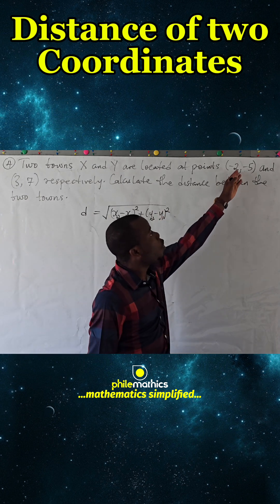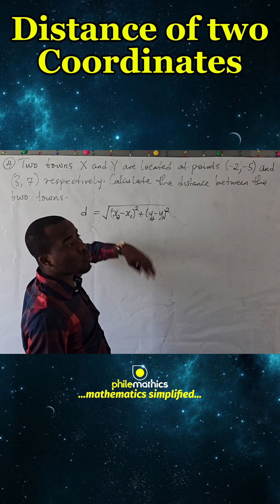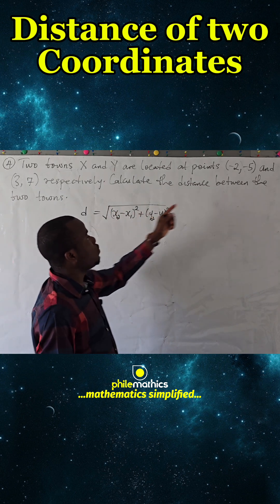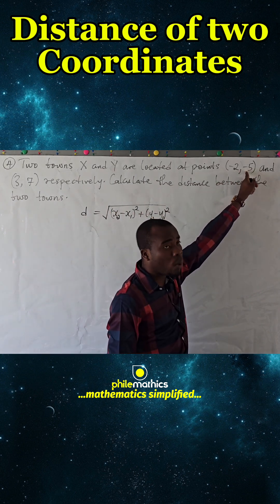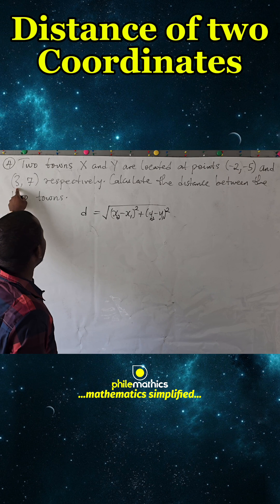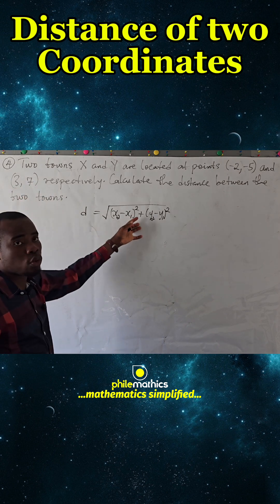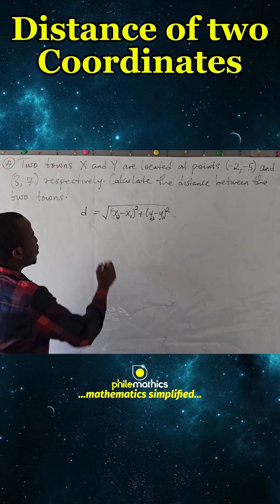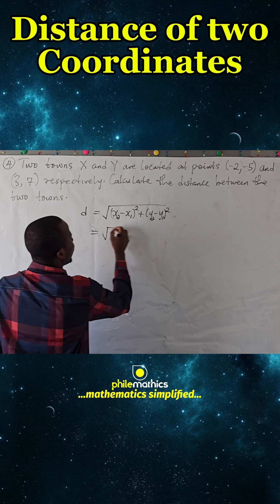We can set to call any of these x1 or y1. So if this is x1, this is y1, this is x2, this is y2. And so when we substitute, we get what the distance is. Upon substitution...